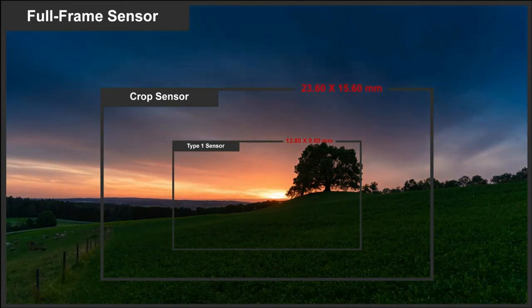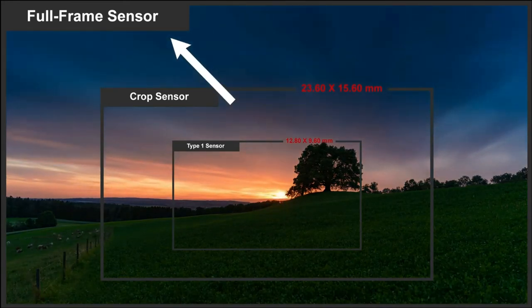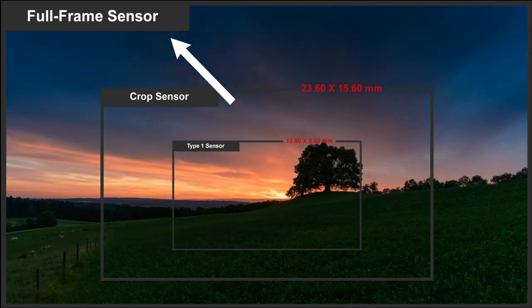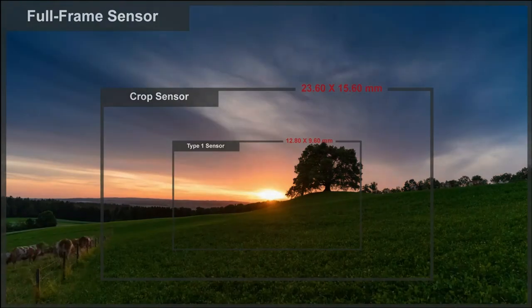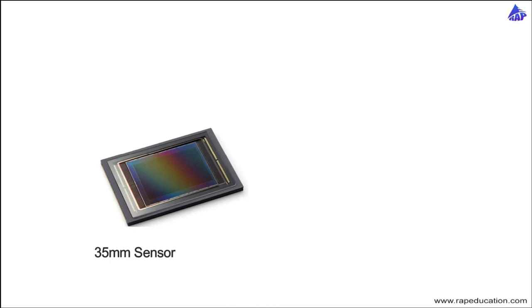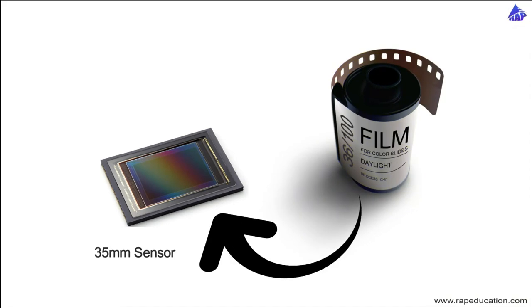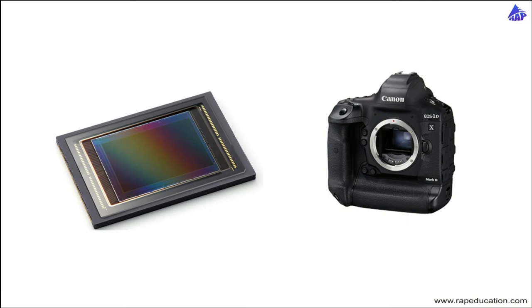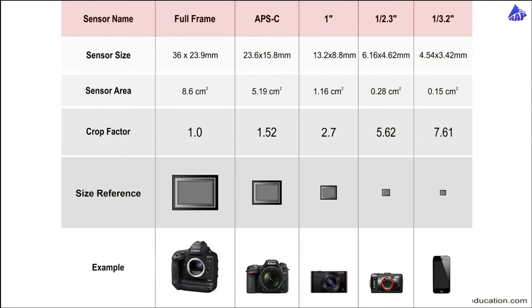One more thing you should know about sensors: the 35mm image sensor is not the largest possible one, because there are no size restrictions for image sensors — you can make one as big as you want. However, we use the 35mm format as the standard. The full frame camera sensor has similar dimensions to the film used in analog cameras. The concept of full frame camera sensors actually came from 35mm films, and we use those dimensions as the standard for full frame sensors today.